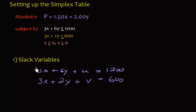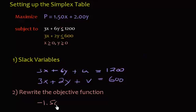And we'll move on to step two, which is to rewrite the objective function. Now, notice that up here, all of my variables are on the left-hand side. The constants are on the right. Well, I want to do that with the objective function, too. So, what I'm going to do is I'm going to bring the 1.5x and the 2.00y, bring it to the left-hand side with the p. So, it's going to be -1.5x - 2.00y + p = 0. So, again, just bring the 1.5x and the 2y over to the left-hand side with the p.